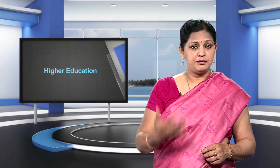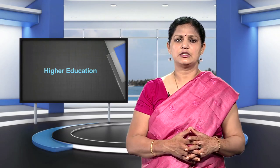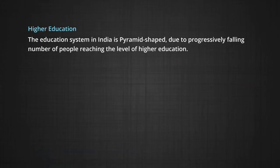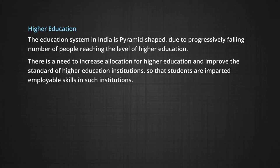Higher education is the most powerful tool to build a knowledge-based society for the future. India's higher and technical education system is one of the largest in the world, but the number of people reaching the level of higher education is very less. The education system in India is pyramid-shaped due to the progressively falling number of people reaching higher education. There is a need to increase allocation for higher education and improve the standards of higher education institutions so that students are imparted employable skills.